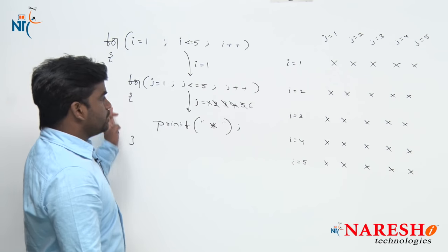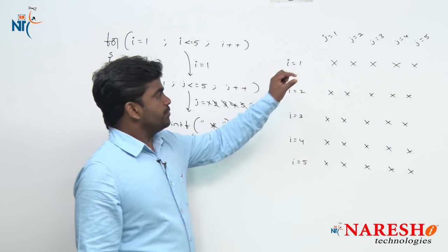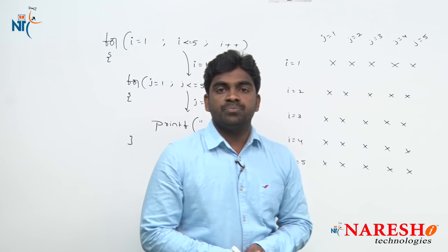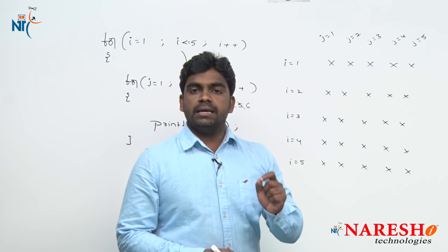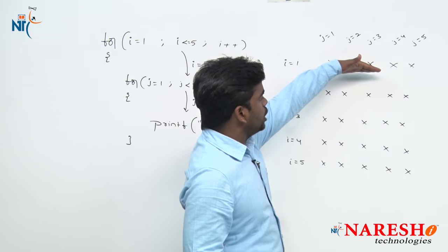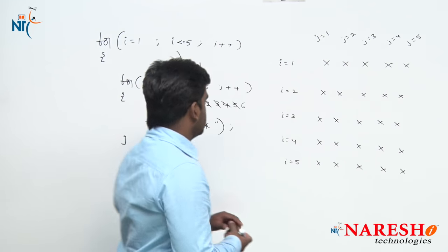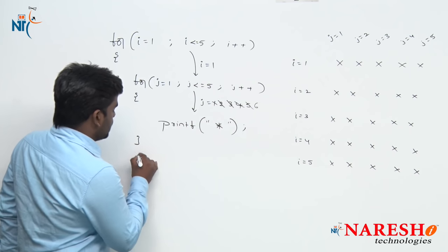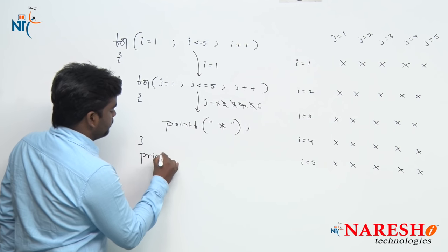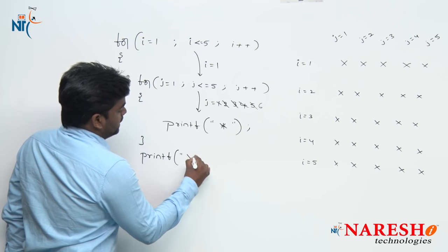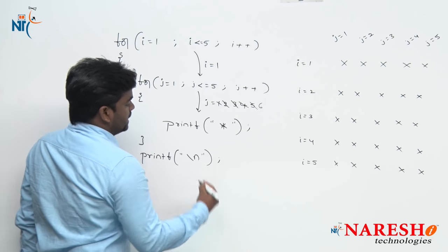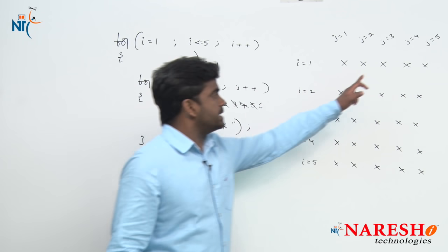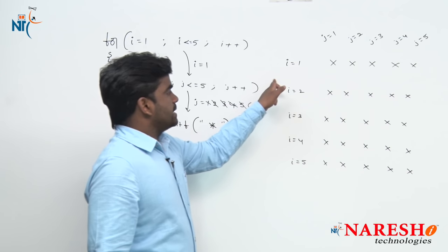Inner loop termination means the first row printing has been completed with i value 1. To send the control to the next row, we use printf followed by the newline escape sequence \n, which sends the control to the next line.